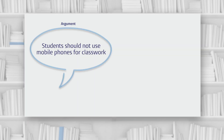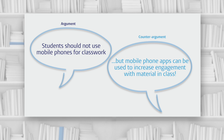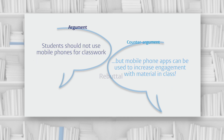With counter-argument and rebuttal, you're showing your reader a problem with your argument, but more importantly, you're showing the reader why your argument still stands despite that problem. Think about what would happen if you didn't include this counter-argument — someone could easily dismiss your statement by saying that mobile phones can actually increase engagement through class participation apps. However, by including and rebutting the counter-argument, you're one step ahead of them. You've argued that since the same functionality can be achieved with a laptop, mobile phones still aren't necessary in class.